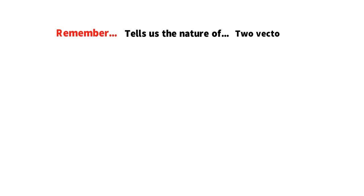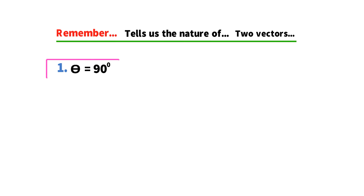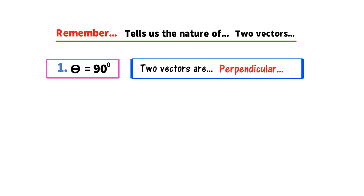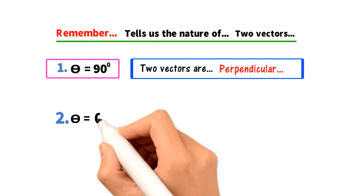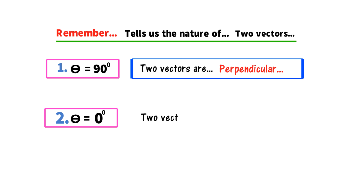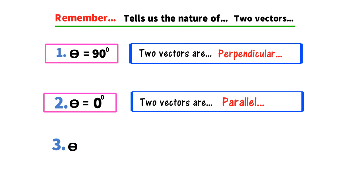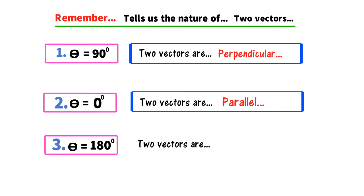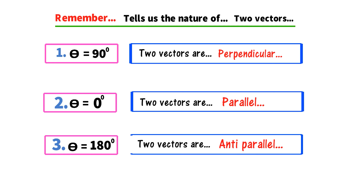The angle from the dot product also tells us about the nature of two vectors. If θ = 90°, the two vectors are perpendicular or orthogonal to each other. If θ = 0°, the two vectors are parallel to each other. If θ = 180°, the two vectors are antiparallel to each other.